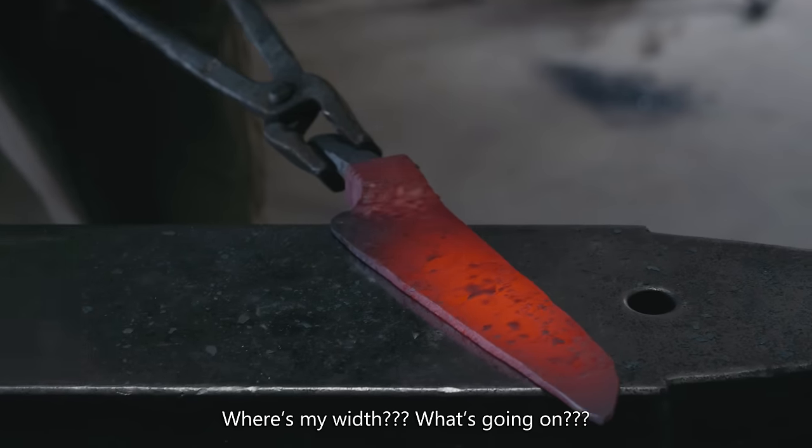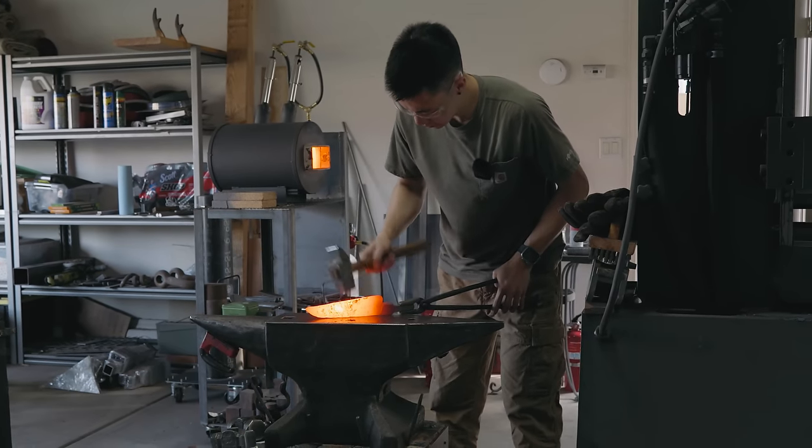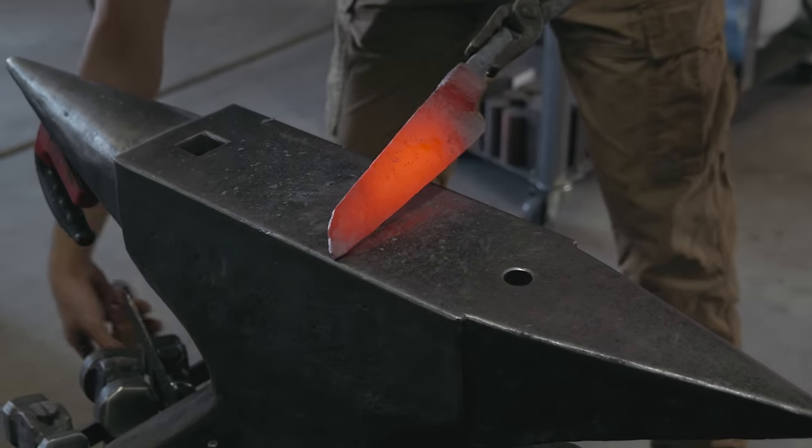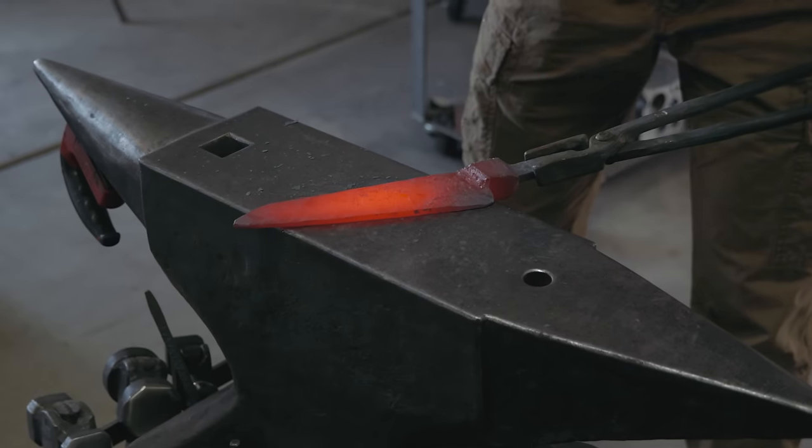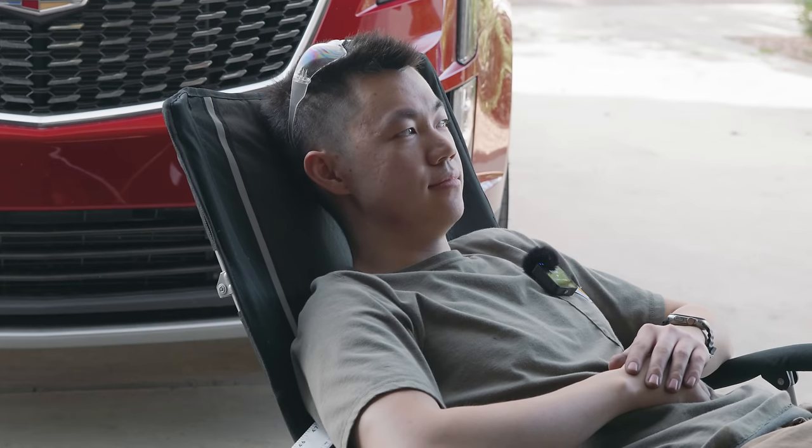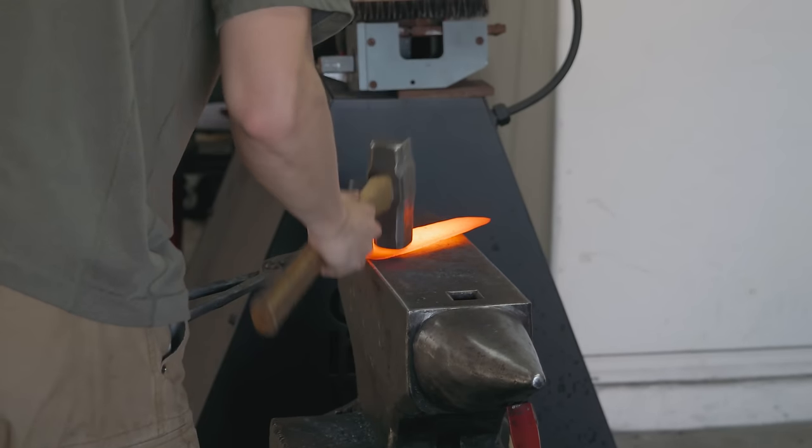Where's my whip? What's going on? I like to think that my metal moving skills with a hand hammer are above average for a bladesmith, but for this build specifically, I was probably in like the 20th percentile. I don't really know what was going on. I was just having a lot of trouble getting it where I wanted it, and as a result, forging the blade took a little bit longer than I would have liked.